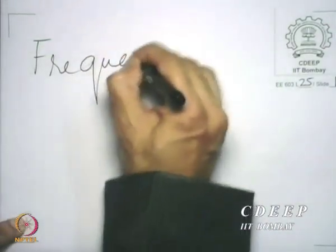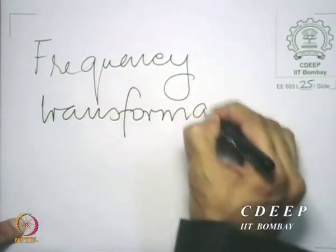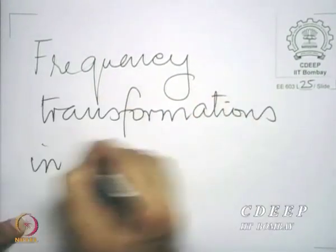Therefore, the process that we are going to follow is to again, as we have done before, take advantage of the designs that we have until date and then use those designs to go further to build other kinds of filters. We have already designed Butterworth and Chebyshev low pass filters. Now we would like to use a transformation on these low pass filters to get filters of other kinds. And therefore, what we are going to do today is to discuss frequency transformations in the analog domain.